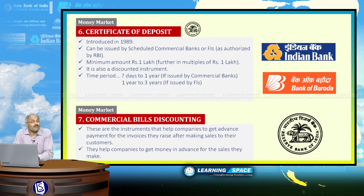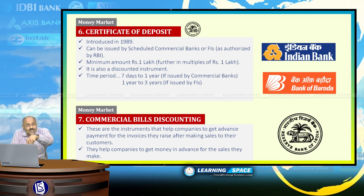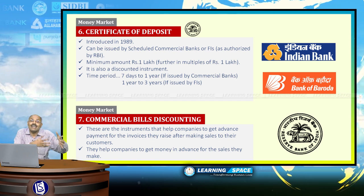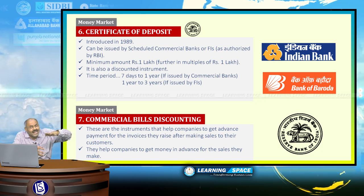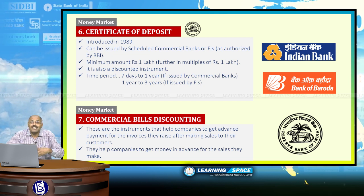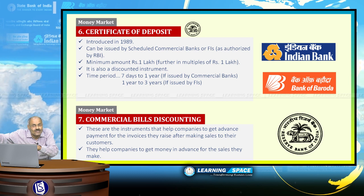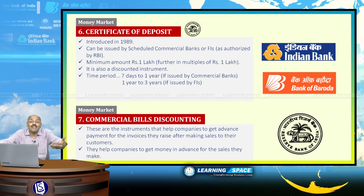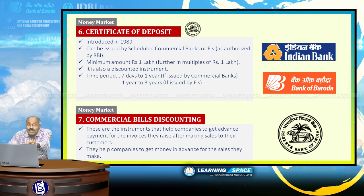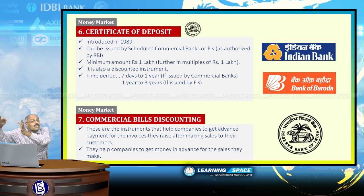Certificate of deposit is issued by banks and financial institutions for borrowing money from the market. If banks are in need of money for a longer period — say 6 months — and there is high demand for credit but deposits are less, banks may borrow from the market by issuing certificates of deposit. If banks are issuing, the minimum period is 7 days and maximum is 1 year. If a financial institution is issuing, the minimum is 1 year and maximum is 3 years.